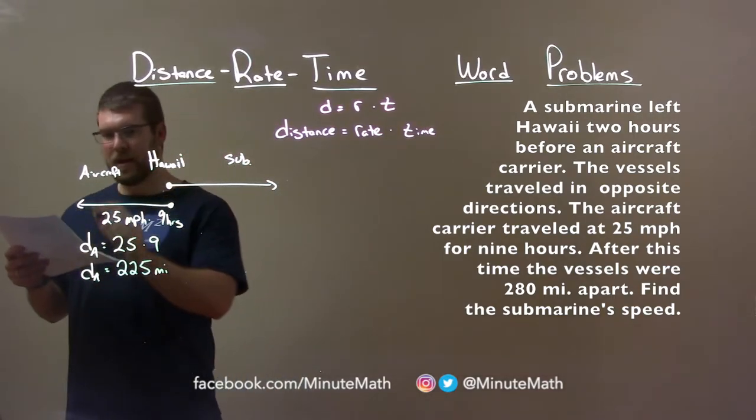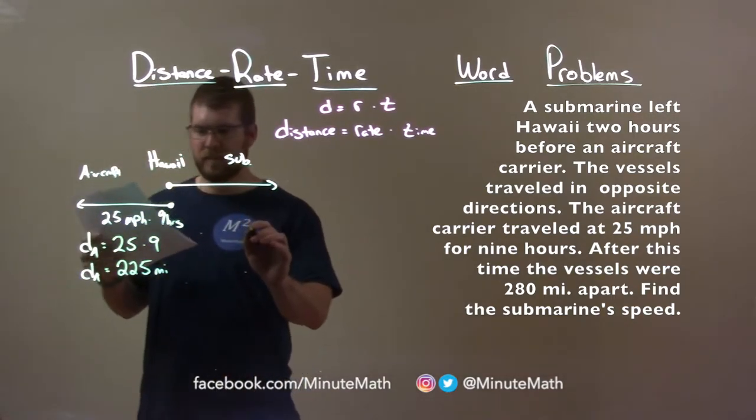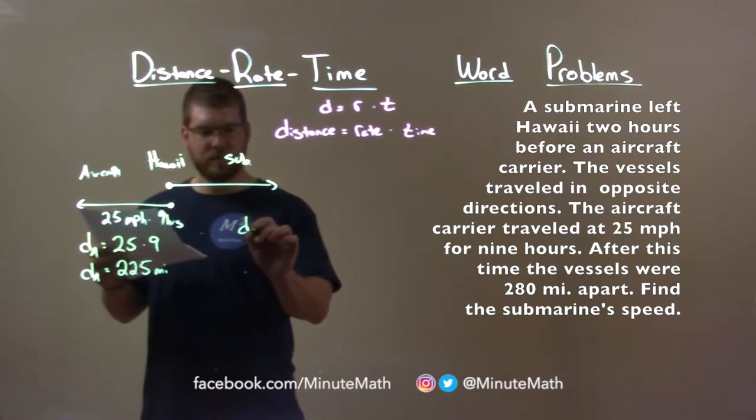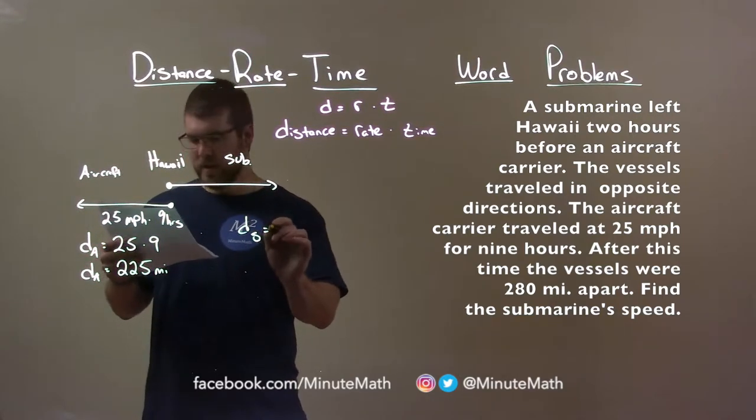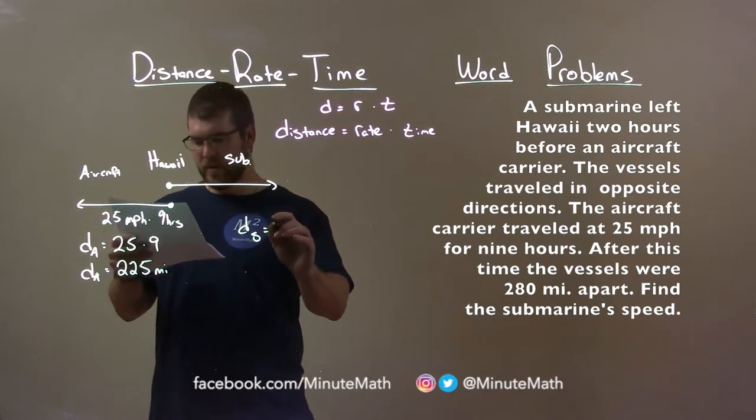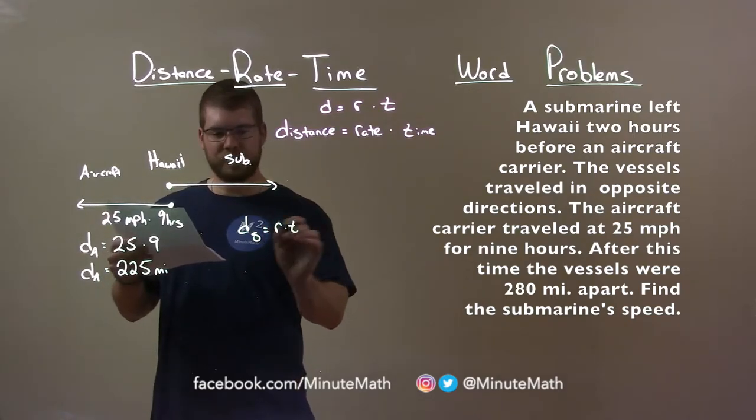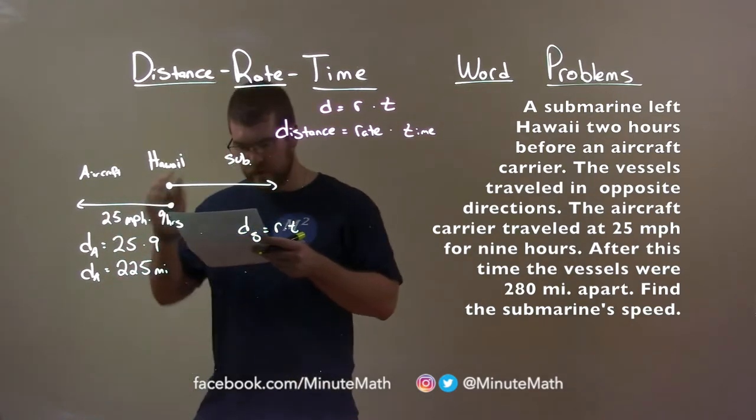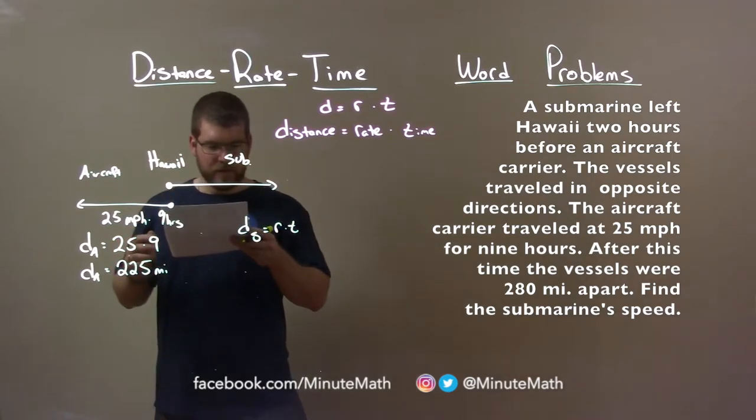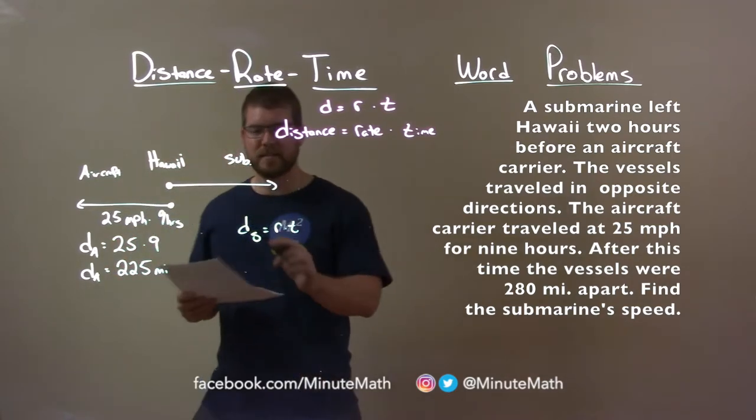The submarine, so this is the aircraft. The submarine traveled, the distance of the submarine is again rate times time. So the distance of the submarine is rate times time. And the distance the submarine traveled, this one's a little tricky. How do we get that distance for the submarine?